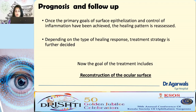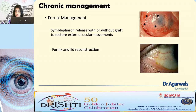Once acute management is done, the next goal is to reconstruct the ocular surface. Chronic management has three components: fornix management, limbal stem cell deficiency, and corneal scars. For fornix management, symblephara are released with or without amniotic membrane to reconstruct the fornix, along with lid reconstruction for comfortable extraocular movements.